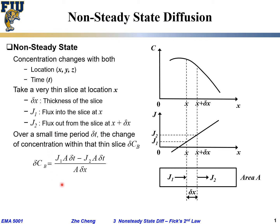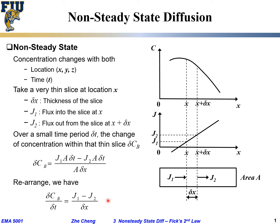This fraction gives us the change in concentration within that small slice. We can simplify this equation: A cancels out from numerator and denominator. Then we move delta t to the left side. Delta c, the change in concentration within this thin slice over time delta t, equals j1 minus j2 — flow in minus flow out — divided by the thin slice thickness delta x.